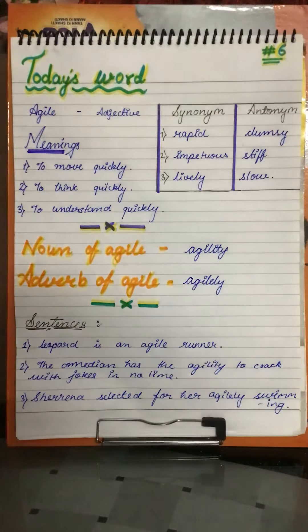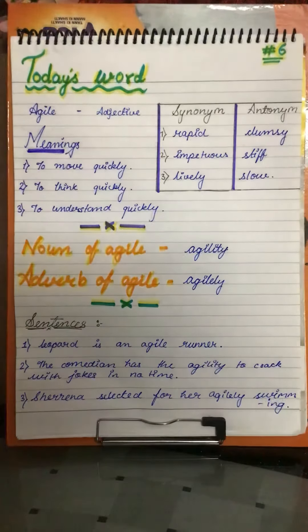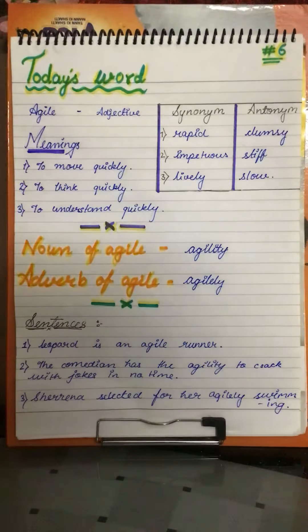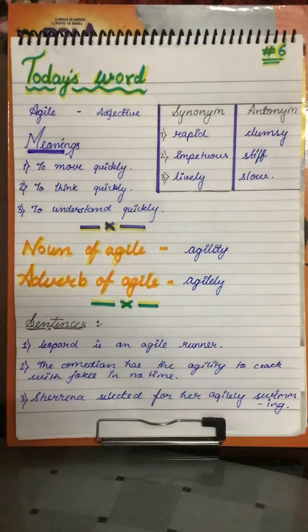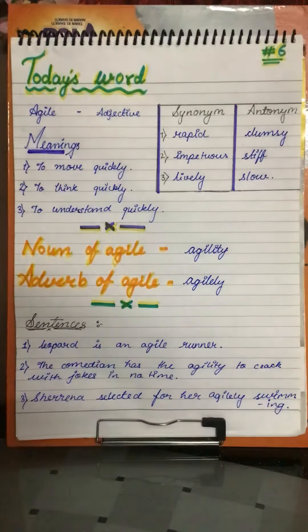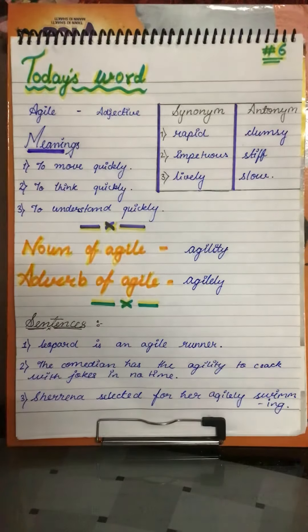Our third sentence is: Sharana was selected for her agilely swimming. Sharana apni tezi se swimming karne ke liye select ho gai.